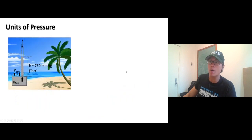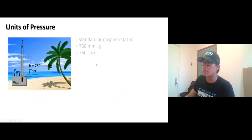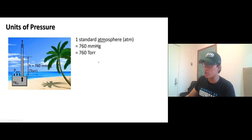We have a standard atmosphere, that's atm. One atm equals 760 millimeter mercury. Millimeter mercury or torr, they are the same unit.